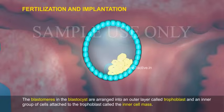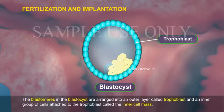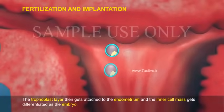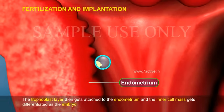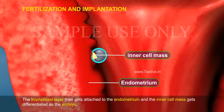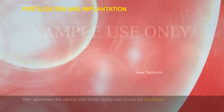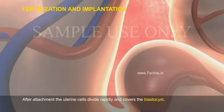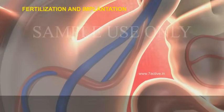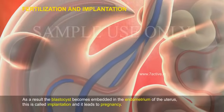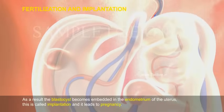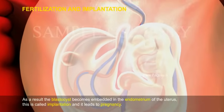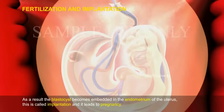The blastomeres in the blastocyst are arranged into an outer layer called the trophoblast and an inner group of cells attached to the trophoblast called the inner cell mass. The trophoblast layer then gets attached to the endometrium and the inner cell mass gets differentiated as the embryo. After attachment, the uterine cells divide rapidly and cover the blastocyst. As a result, the blastocyst becomes embedded in the endometrium of the uterus. This is called implantation and it leads to pregnancy.